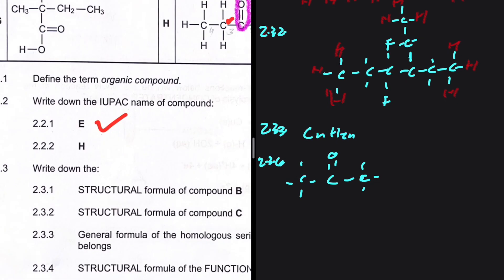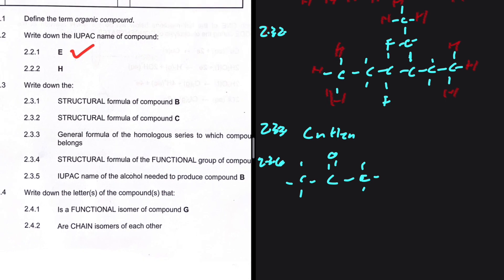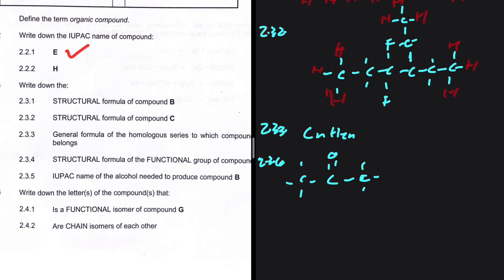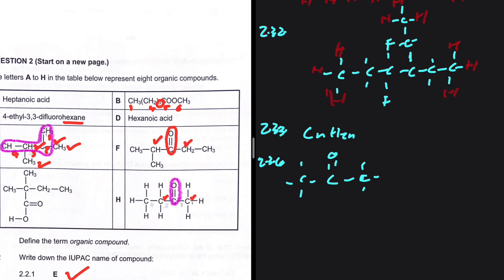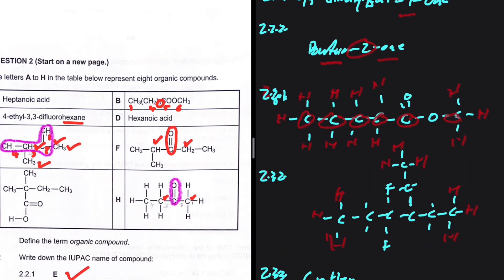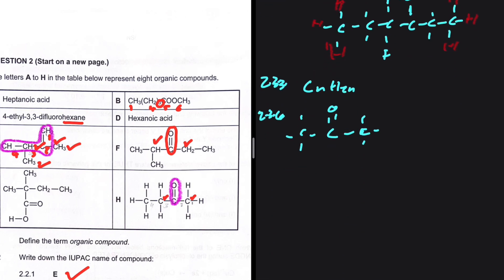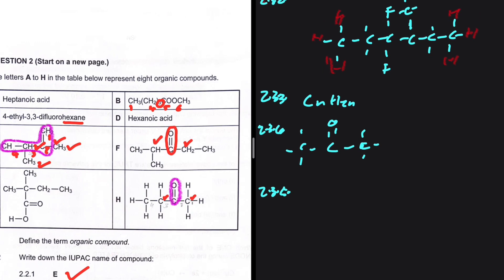For 2.3.5, the IUPAC name of the alcohol needed to produce compound B: looking at the structure of compound B, the part bonded to a single oxygen comes from an alcohol. That portion has one carbon, and the alcohol with one carbon is methanol.